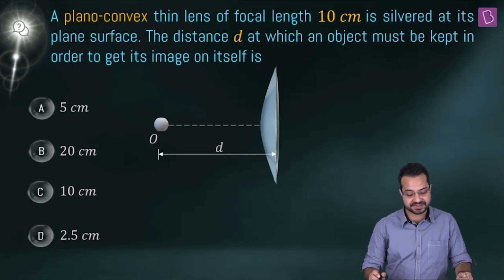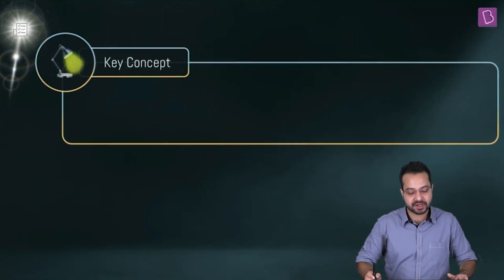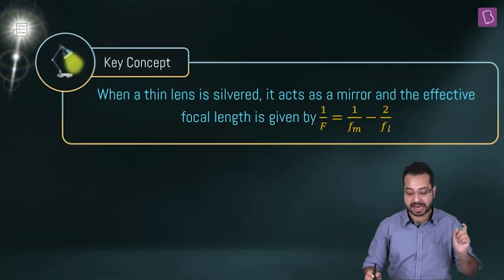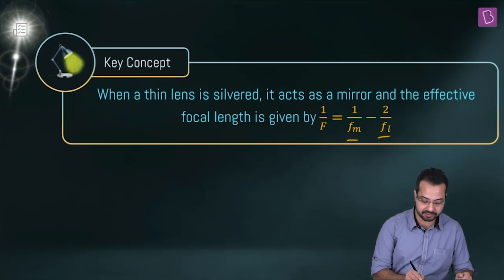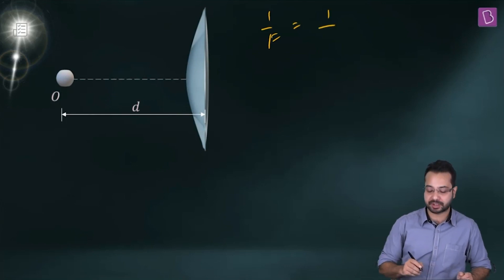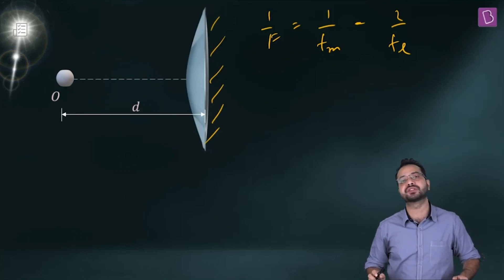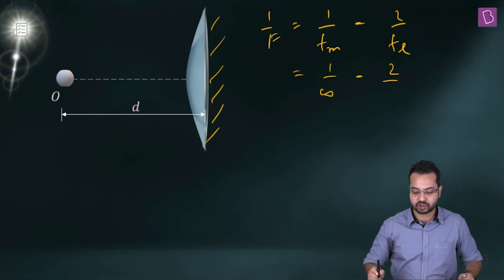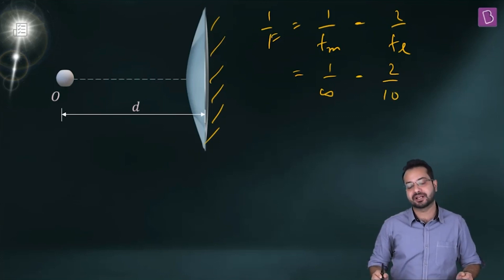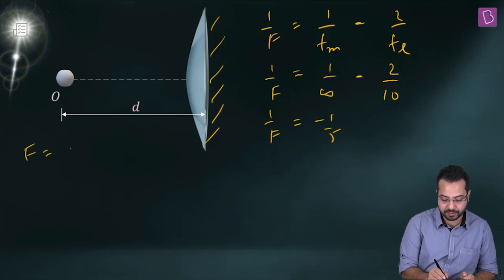A plano-convex thin lens of focal length 10 cm is silvered at its plane surface. When a lens is silvered, it acts as a mirror with effective focal length given by 1/F = 1/F_mirror - 2/F_lens. The plane surface is a plane mirror, so F_mirror = infinity. Thus 1/F = 0 - 2/10 = -1/5, giving F = -5 cm. This acts as a concave mirror of focal length 5 cm.